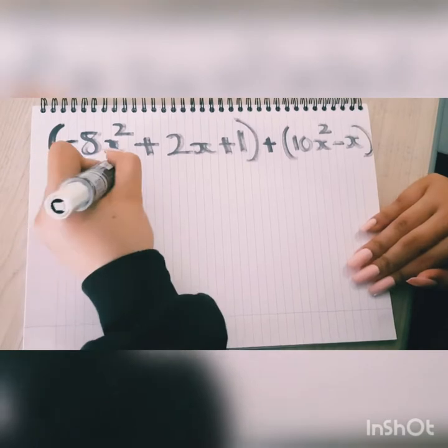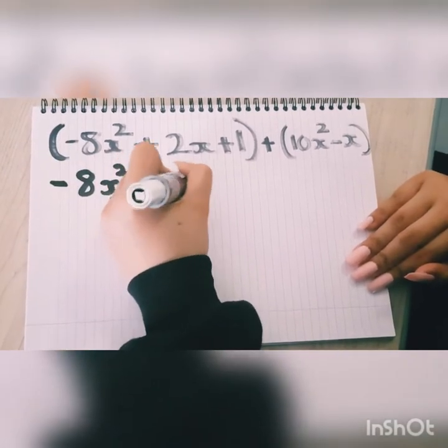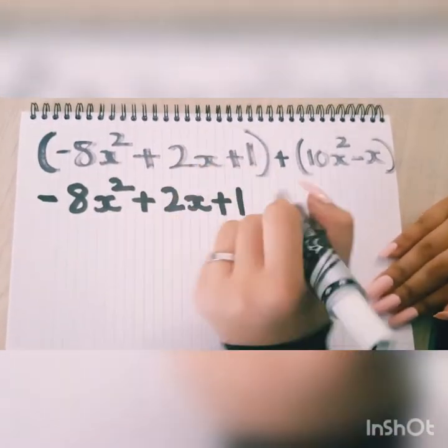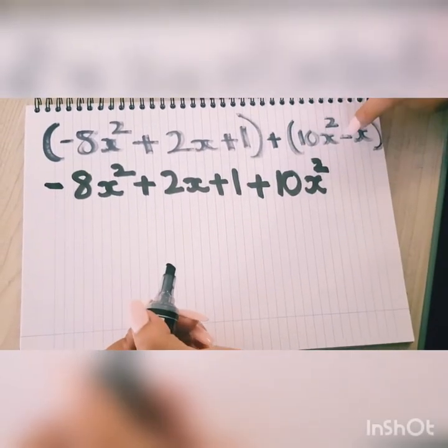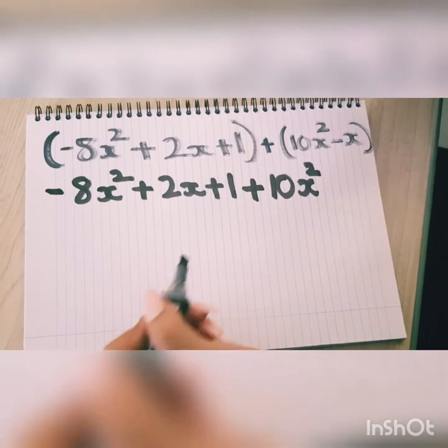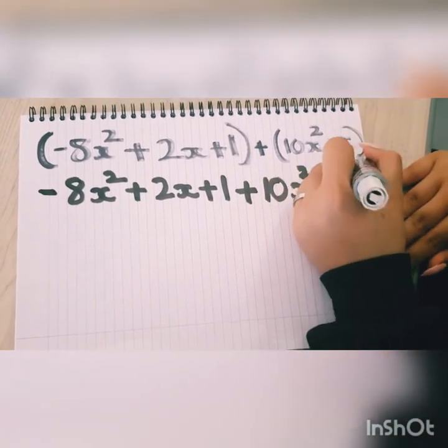So you have -8x² + 2x + 1 + 10x² and when you multiply a positive and negative always remember it turns into negative, so -x.